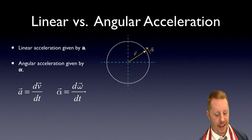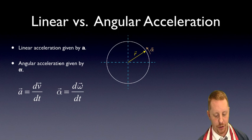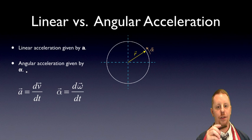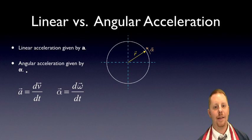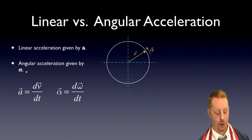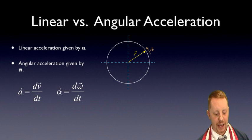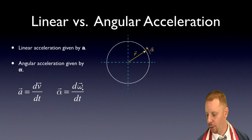We can also talk about linear versus angular acceleration. If linear acceleration is given by the vector A, then angular acceleration is given by the vector alpha, α. Alpha tells you how fast your angular velocity is changing as you go around the circle — relevant when objects speed up or slow down while rotating. Just as acceleration is the derivative of velocity with respect to time, angular acceleration is the derivative of angular velocity with respect to time.